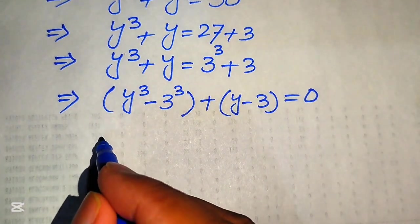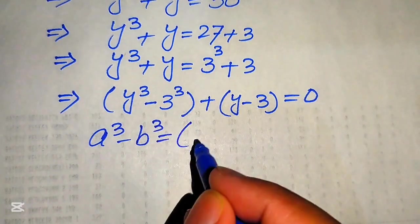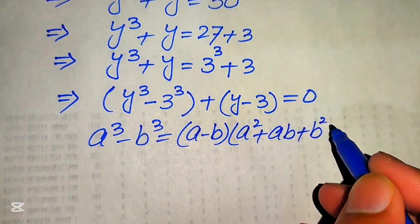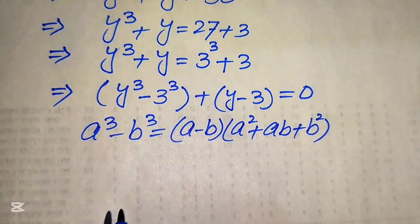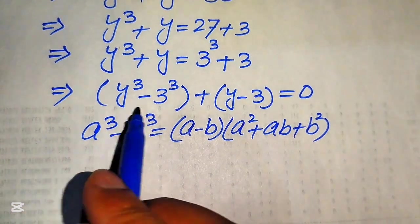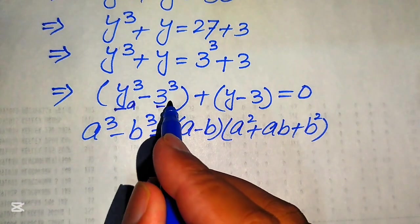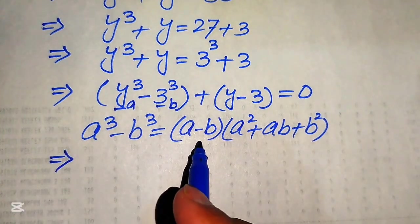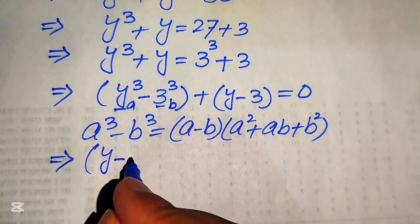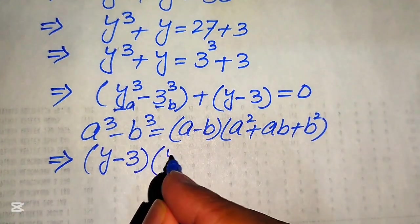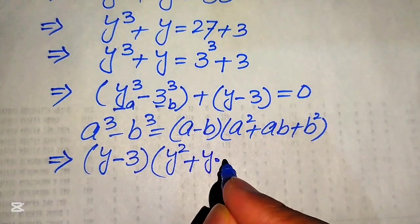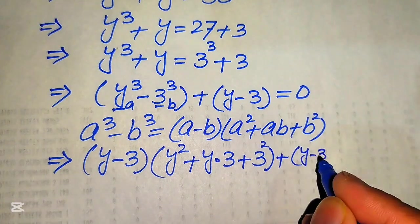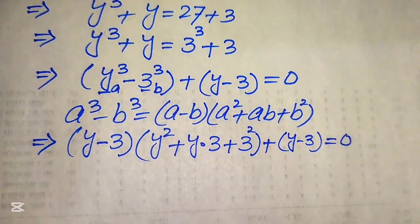We solve using the difference of cubes formula: a³ − b³ = (a − b)(a² + ab + b²). Here a = y and b = 3. Applying this to y³ − 3³ gives (y − 3)(y² + 3y + 9), and the remaining factor is (y − 3), so we have (y − 3)(y² + 3y + 9) + (y − 3) = 0.